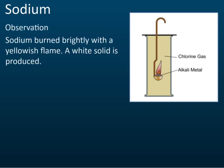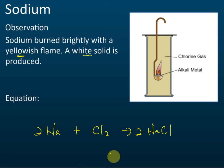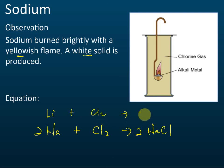For sodium, it's more or less the same but with a yellowish flame. A white solid is also produced. The equation: 2Na + Cl₂ → 2NaCl, sodium chloride. The equation is essentially the same as for lithium, just replacing lithium with sodium.